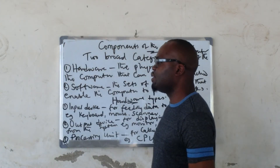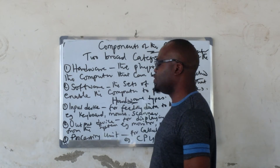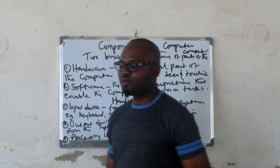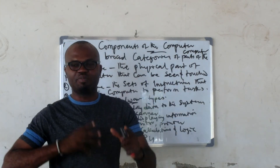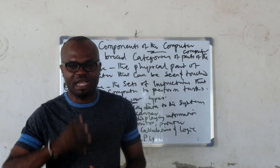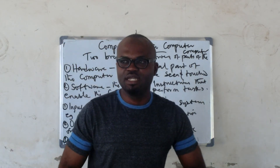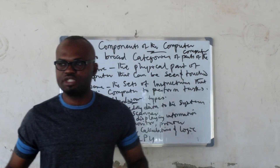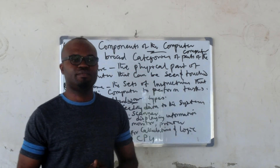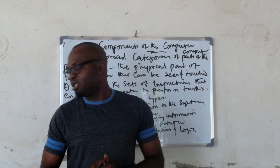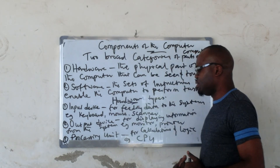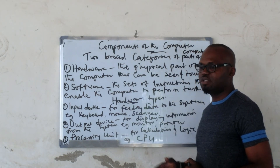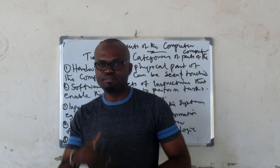Then lastly, we have the processing unit. The processing unit is like the brain of the computer that enables the computer to perform calculations. A good example of a processing unit is the CPU.